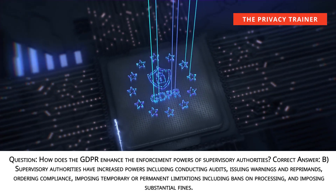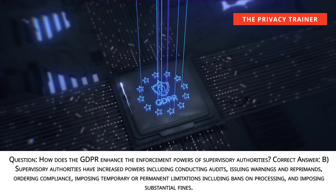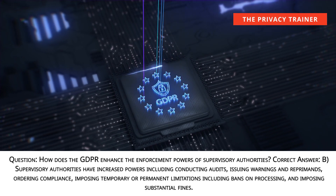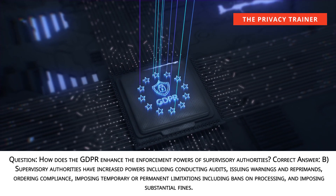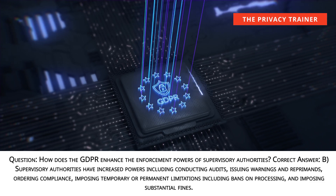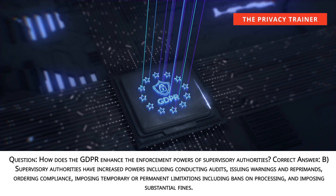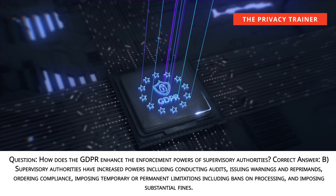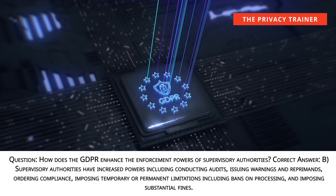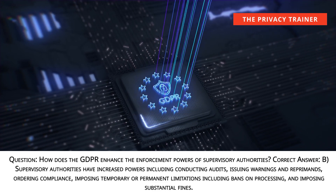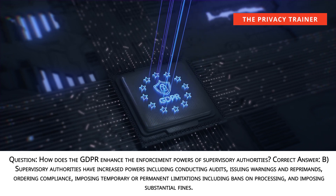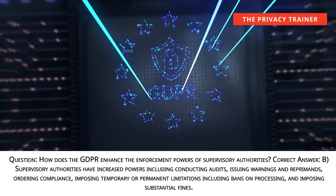Question: How does the GDPR enhance the enforcement powers of supervisory authorities? Answer B: Supervisory authorities have increased powers including conducting audits, issuing warnings and reprimands, ordering compliance, imposing temporary or permanent limitations including bans on processing, and imposing substantial fines.